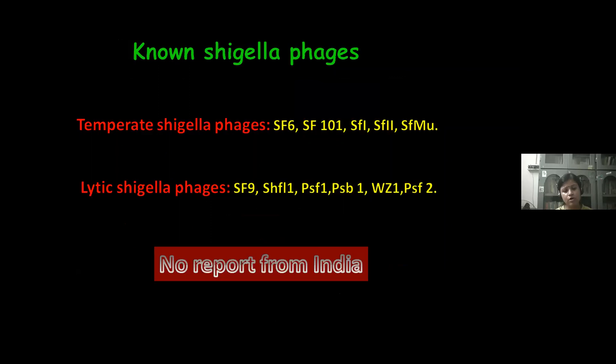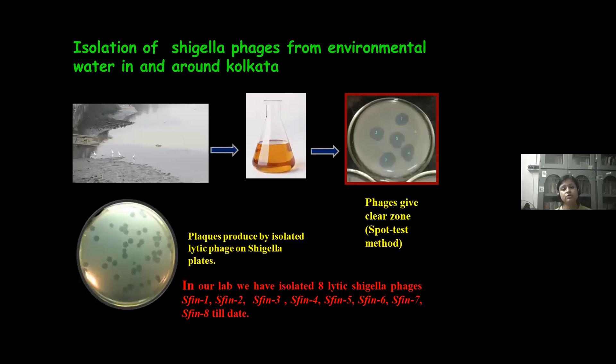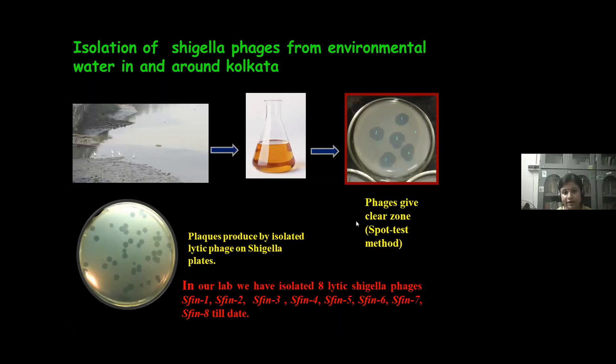In our lab, we are involved in the isolation of Shigella phages from environmental water samples. We have isolated Shigella phages from the river Ganga, the main river of our country, and these phages can show specificity against different Shigella species. Till now, we have isolated eight Shigella phages: SF-1, SF-2 to SF-8. I will concentrate my talk on the detailed characterization of SF-1.